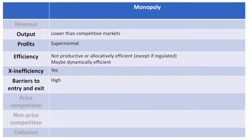In a monopoly, output is lower than in competitive markets. Firms are able to achieve supernormal profits in the short and long run. They are not allocatively efficient as the prices charged are higher than marginal cost. They are also not productively efficient as they are likely not operating at the lowest point of their average costs. However, a natural monopoly may charge a price equal to marginal cost and thus be allocatively efficient. Depending on where their average cost is, it may also be closer to productive efficiency. Dynamic efficiency is a likely outcome if the firm is using its supernormal profits to innovate and develop new products that meet the needs of the market. Exit efficiency is a likely outcome if the firm is producing at an average cost above what it potentially could be.